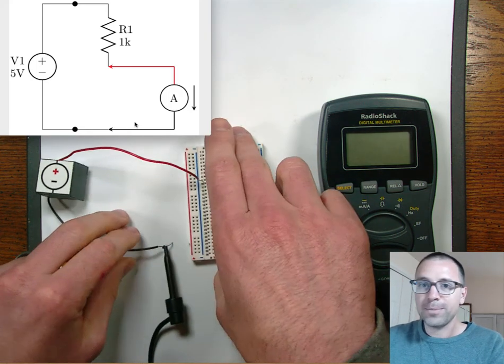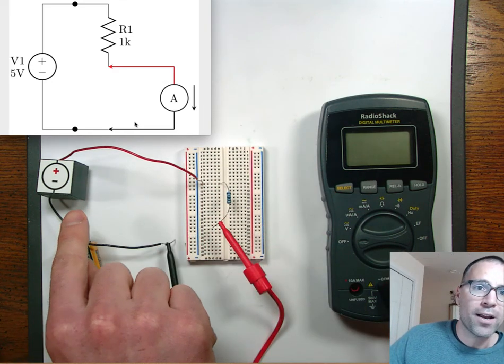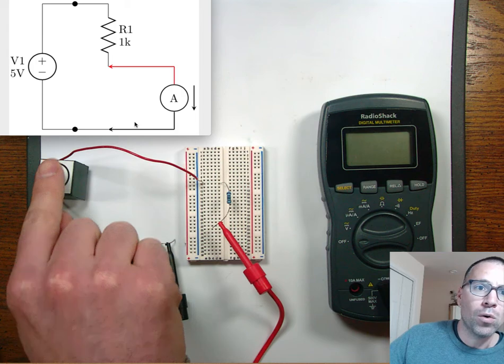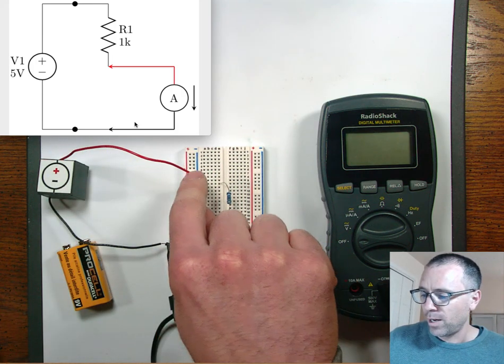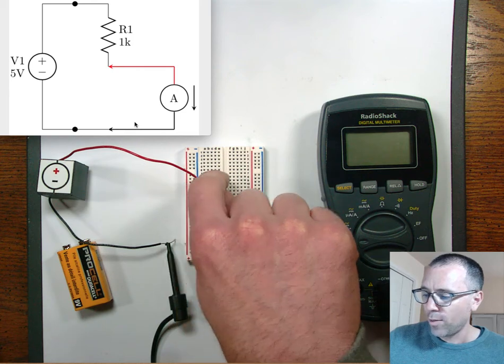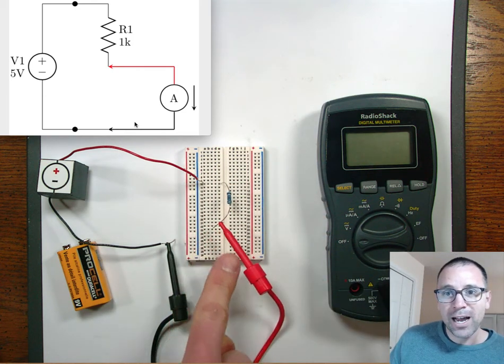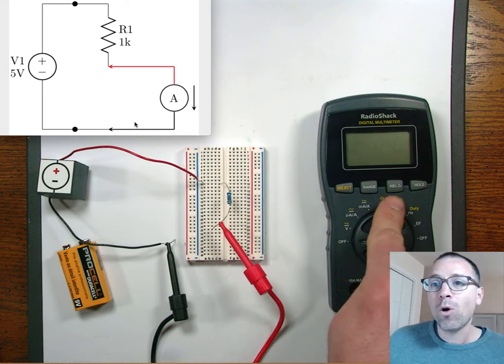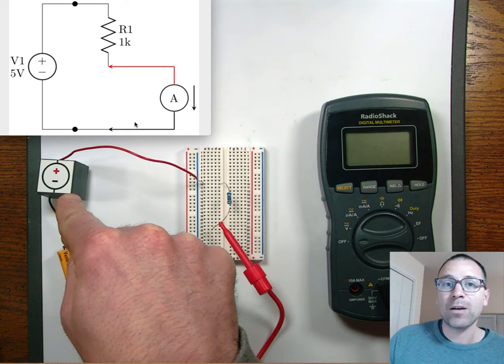And so now the whole concept here is when this circuit is turned on, when I power it, current is going to flow from the positive lead of the voltage source down through this resistor. And then that current is going to be kind of forced in through the multimeter, out through the black lead, back this way, and that completes the circuit.